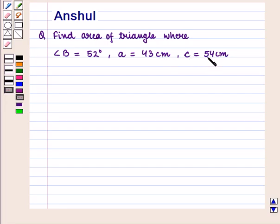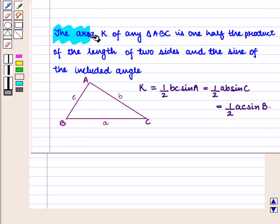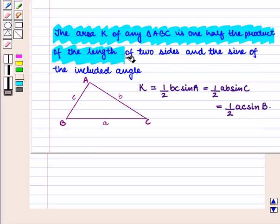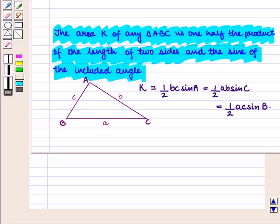We know that the area K of any triangle ABC is one half the product of the length of two sides and the sine of the included angle.